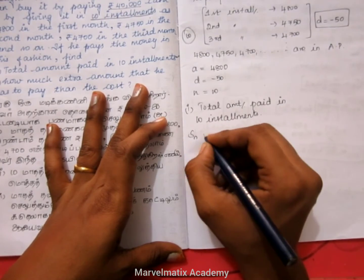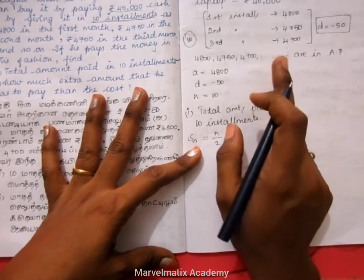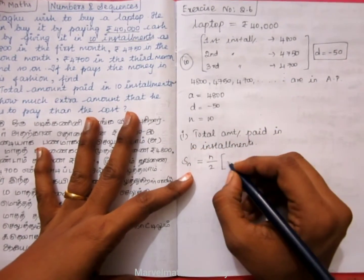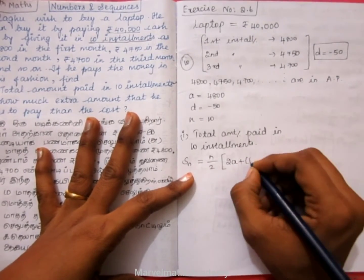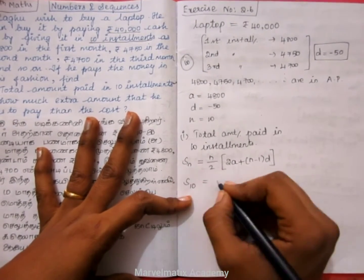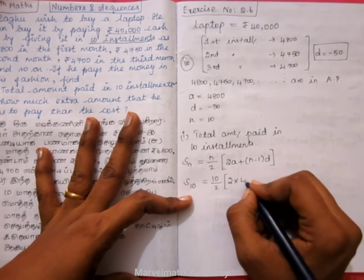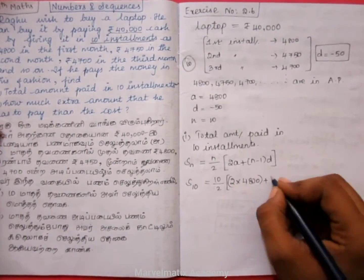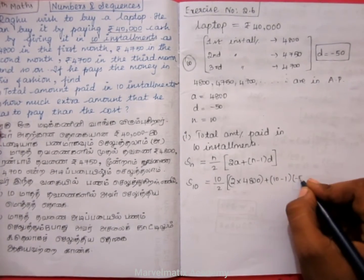Total amount paid in 10 installments. The formula is S_N = N divided by 2 into 2A plus (N minus 1) into D. So: 10 divided by 2, into 2 into A which is 4,800, plus N minus 1 which is 10 minus 1, into D which is minus 50.